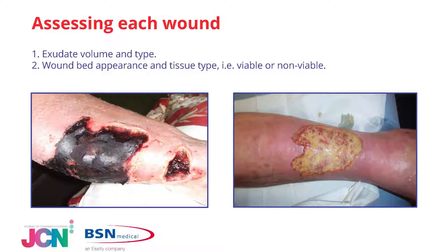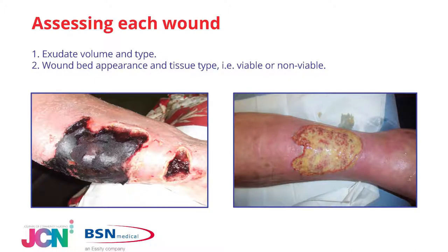Wound bed assessment — for example, a wound with 100% slough — makes it difficult to accurately measure depth, but we still need to measure and note the appearance of the wound bed to help set objectives. In this case, the objective would be to debride or assist autolysis and removal of devitalised tissue. Exudate volume, type, and viscosity are also important. Exudate is a natural process of wound healing; however, uncontrolled and unmanaged exudate can become problematical to the peri-wound skin and cause further deterioration, so consistent holistic assessment of exudate is important.